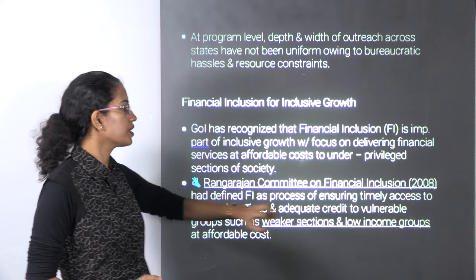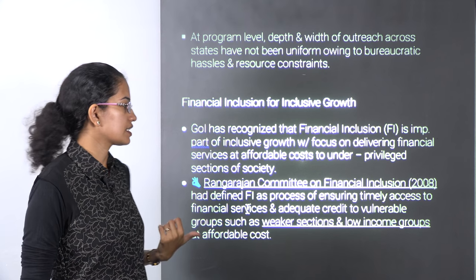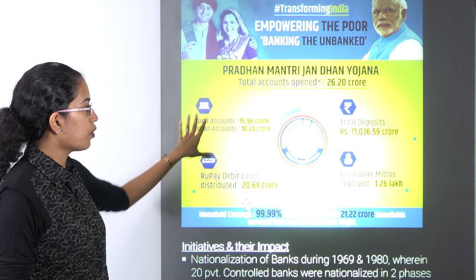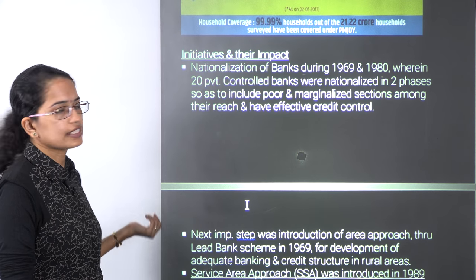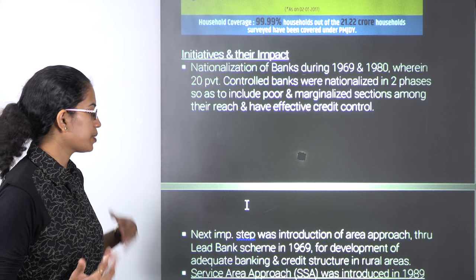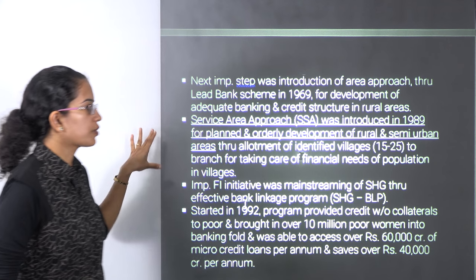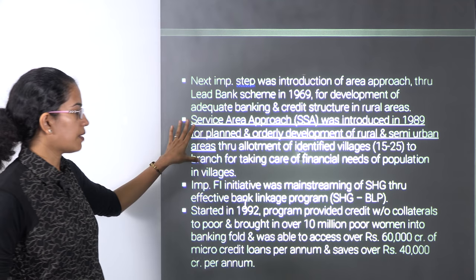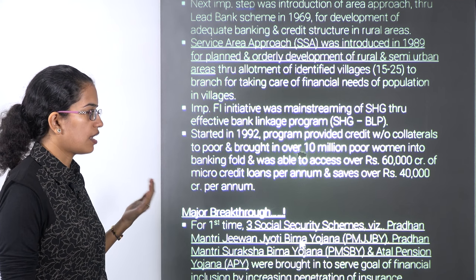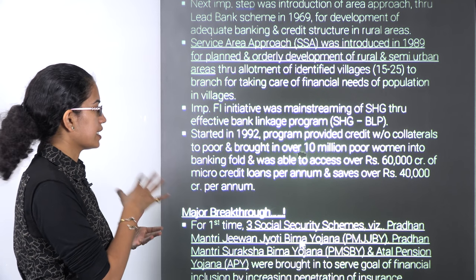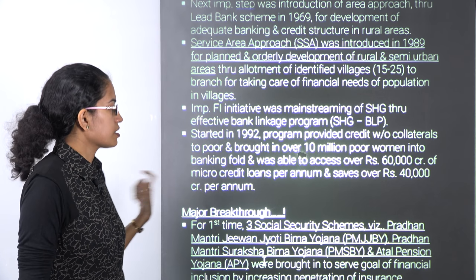For financial inclusion, we have the Jan Dhan Yojana, and the Rangarajan Committee on financial inclusion which talked about making things affordable for weaker sections and low-income groups — leading to the opening of numerous rural and urban bank accounts and issuance of rupee cards. This is considered one of the world's biggest projects in terms of the number of people enrolled. The Service Area Approach, introduced in 1989, focused on good development in rural and semi-urban areas including managing self-help groups with bank linkages. In 1992, a program started to provide credit without collateral, aiming to cover nearly 10 million poor women for the purpose of credit loans.